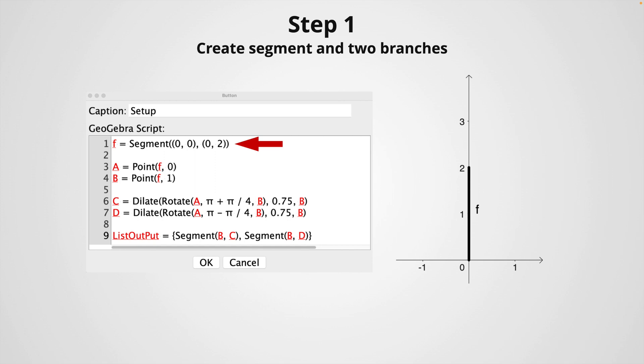Lines 3 and 4 create points A and B using the command point. Notice I used also a parameter, in each case 0 and 1 respectively. This will define both points as the endpoints of my segment F.